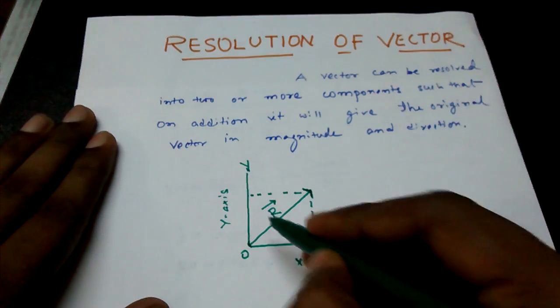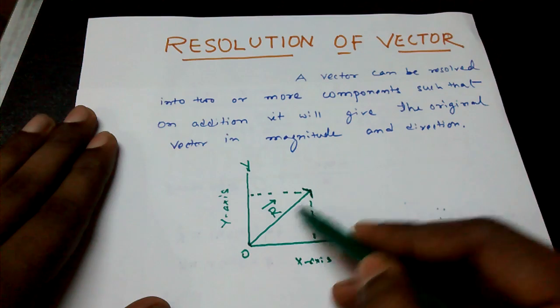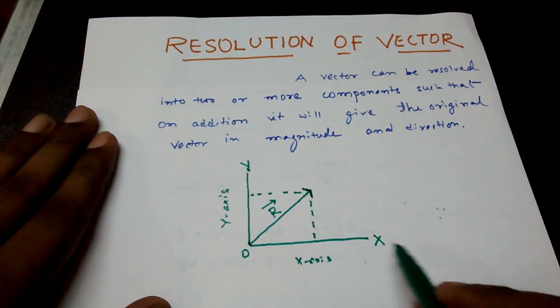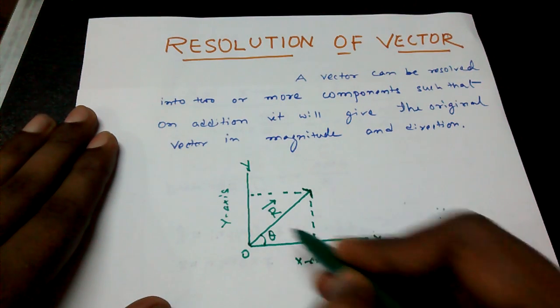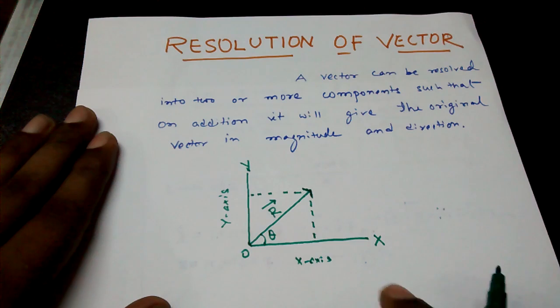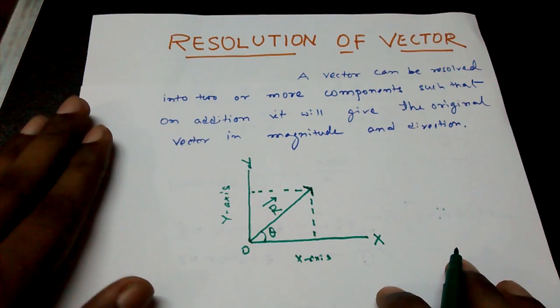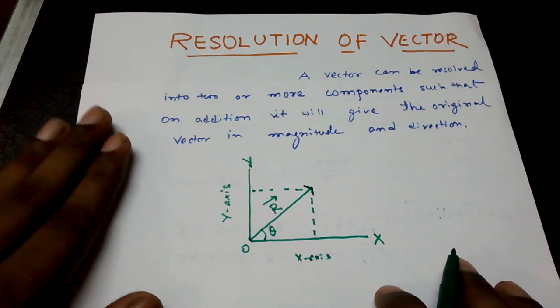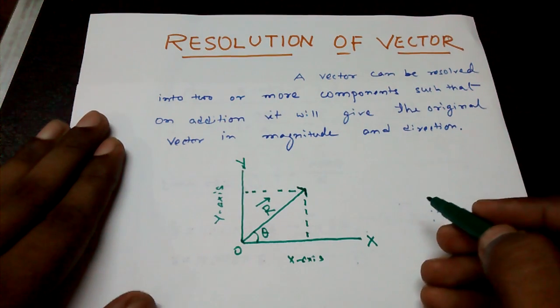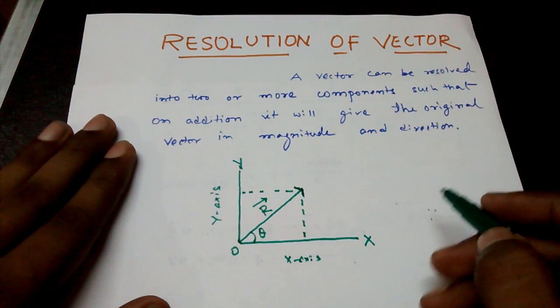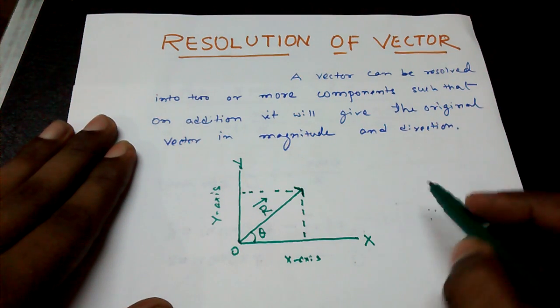Now if R vector is making an angle theta with the X axis, we know very well about the trigonometric ratio, sin theta and cos theta.